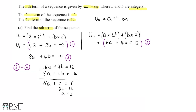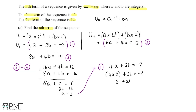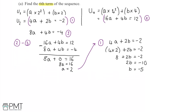Substituting a equals 2 back into equation 1: 4 times 2 plus 2b equals minus 2, so 8 plus 2b equals minus 2. Subtracting 8 from both sides gives 2b equals minus 10, and dividing by 2 gives b equals minus 5. So the nth term of the sequence is un equals 2n squared minus 5n.